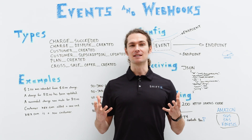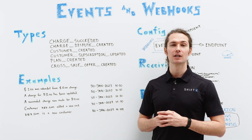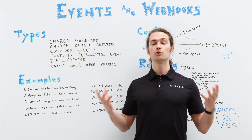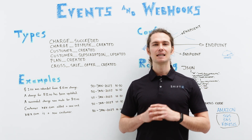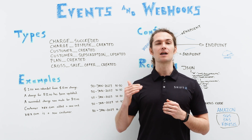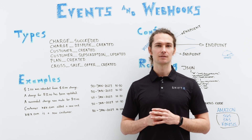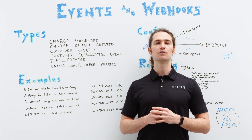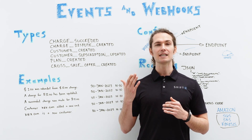Let's start with events. Events represent everything that has happened on your account as it relates to payments. For example, a new charge is represented as an event. These events allow you to have a full step-by-step audit and history of everything that has happened on your account. Using Shift4's API, merchants can view a full list of all events or retrieve a single event.